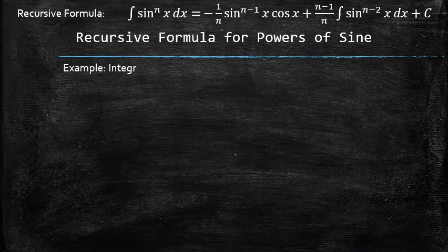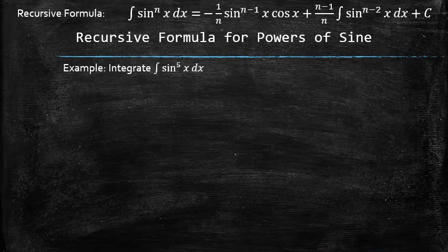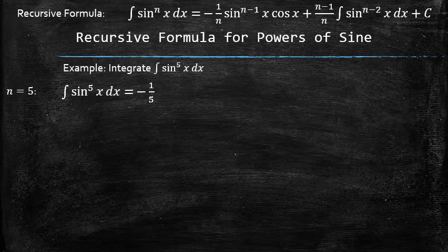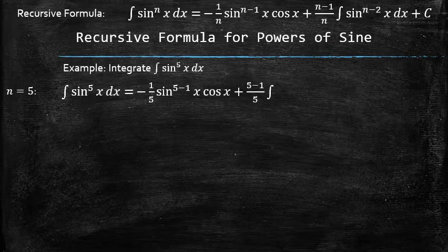Let's use the recursive formula to find the integral of the sine raised to the 5th power. To apply the formula, we set n equals 5 and replace every appearance of n in the formula with 5.